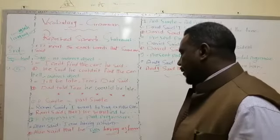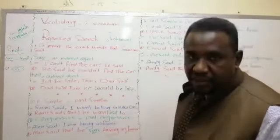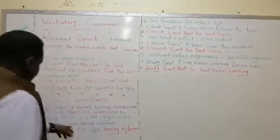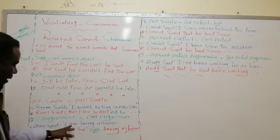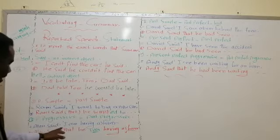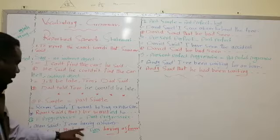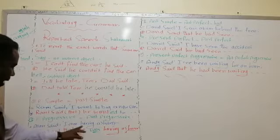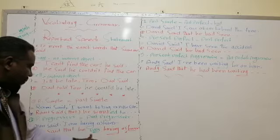In present progressive, we change the sentence to past progressive. The verb 'to be' changes from 'is' to 'was', and 'are' to 'were'. Alan said: 'I am having a shower.' We say: 'Alan said that he was having a shower.' We change the pronoun and the verb to be — from 'am' to 'was'.